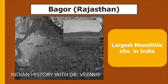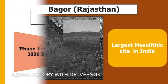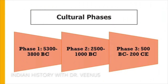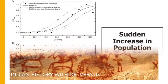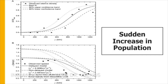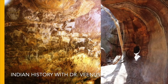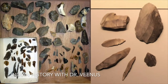On the other hand, Bagor near Rajasthan is the largest Mesolithic site excavated in India, and it has yielded three cultural phases: phase 1 is dated from 5300 BC to 3800 BC, phase 2 from 2500 BC to 1000 BC, and the last phase from 500 BC to 200 BC. The Mesolithic culture in Bhimbetka is well defined, with a sudden increase in population seen from the occupation of more caves in the area. Various microliths like blades, triangles and crescents were excavated here.